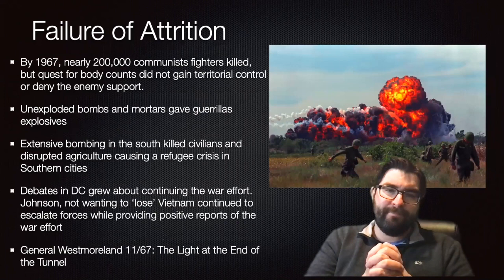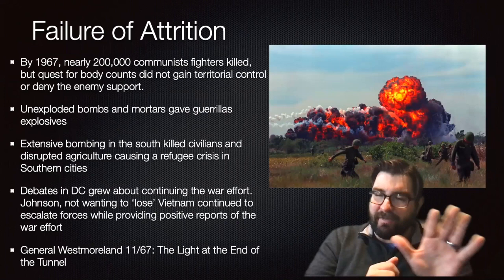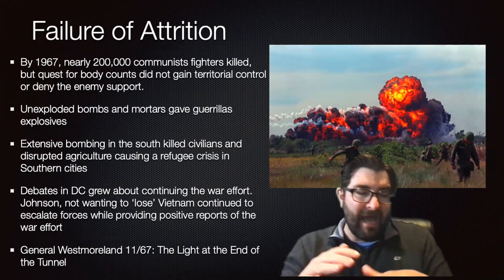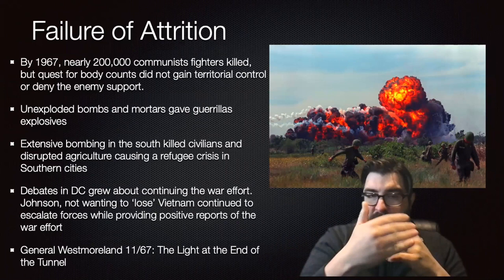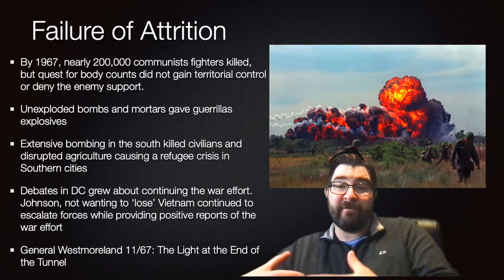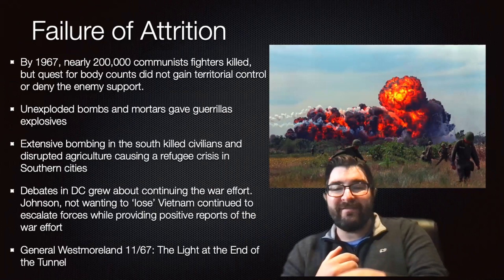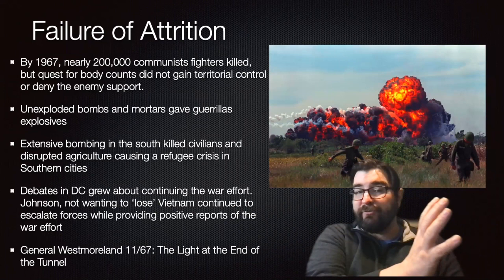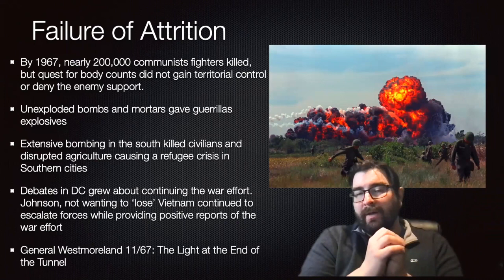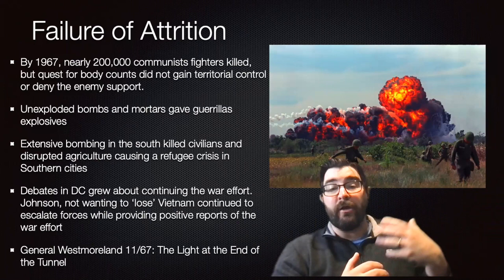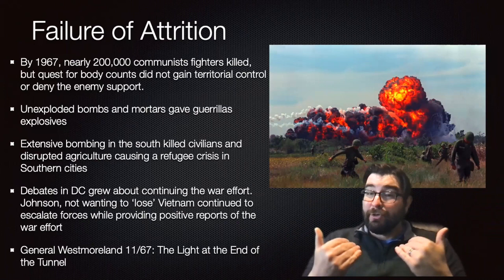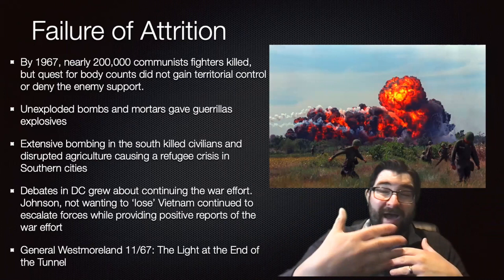The war of attrition is also a failure. By 1967, nearly 200,000 communists had been killed, but this quest for body counts was not gaining any territory or denying the enemy supplies from the Ho Chi Minh Trail. Unexploded bombs and mortar rounds gave guerrilla fighters explosives they could use against the Americans. Extensive bombing in the South killed civilians and disrupted agriculture, leading to a massive refugee crisis as rural refugees moved into urban centers. All the while, debates in Washington grew about the continuing war effort. Johnson, not wanting to lose Vietnam to communism, continued to escalate forces while presenting positive reports to the American public.